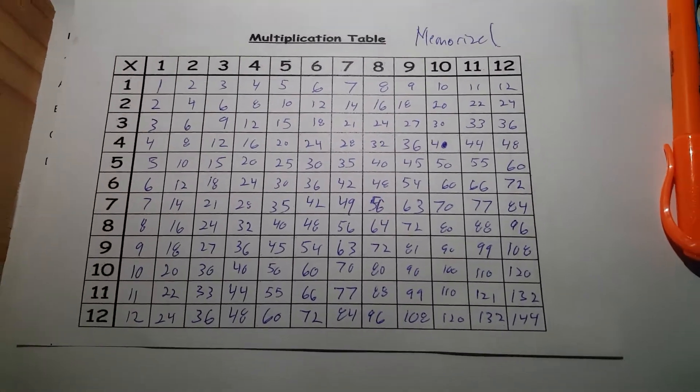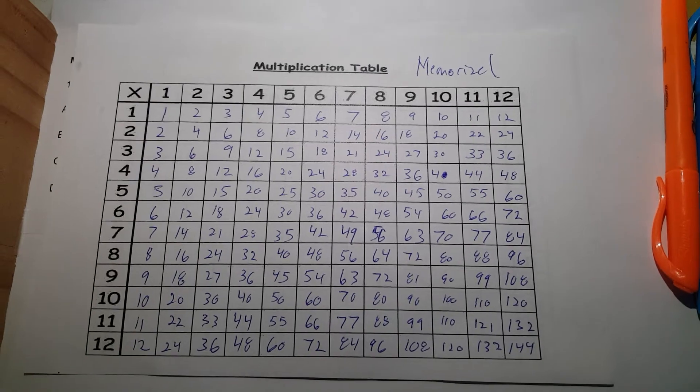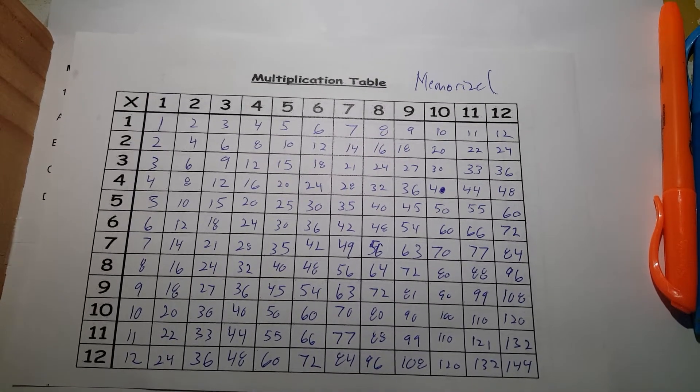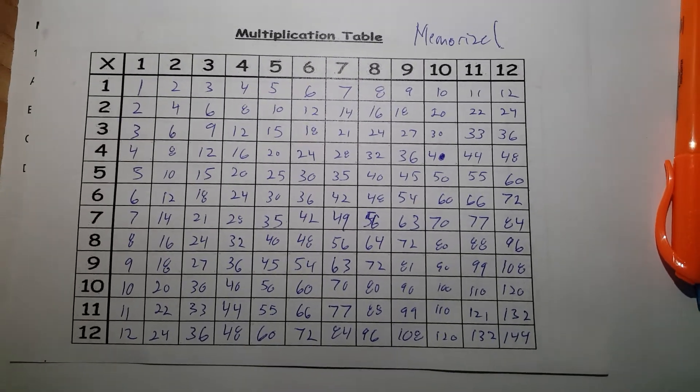Memorize the multiplication table as fast as possible. You should have started this in second or third grade, and by fourth or fifth grade you need to have this automatic.